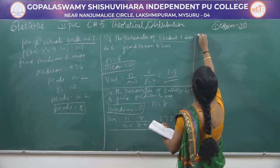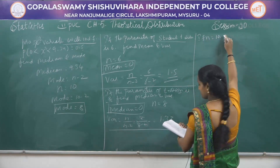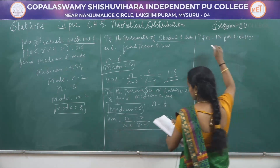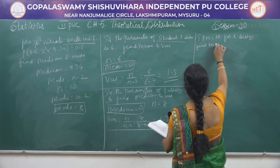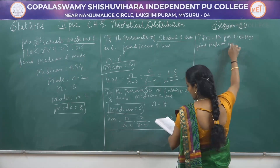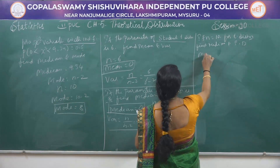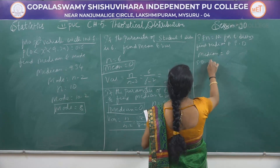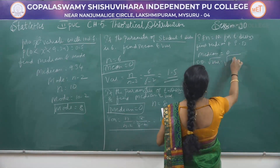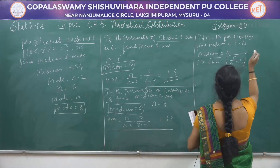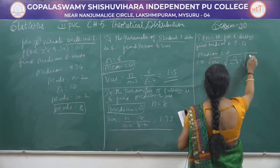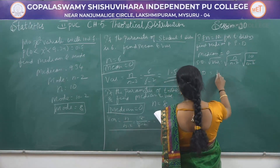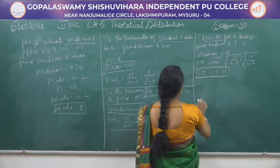Problem: For a t-distribution with n = 10, find median and standard deviation. Median = 0. Standard deviation = √(n / (n − 2)) = √(10 / (10 − 2)) = √(10/8) = 1.11.